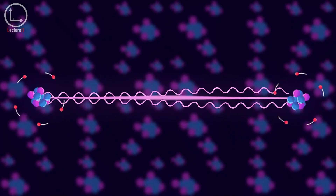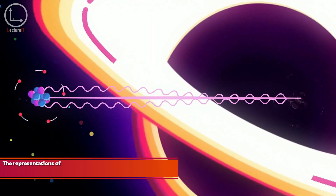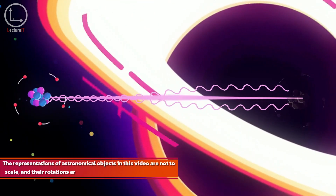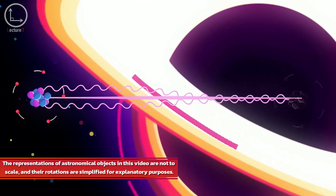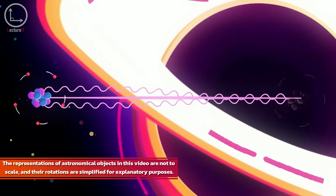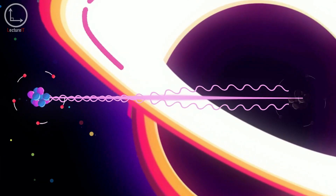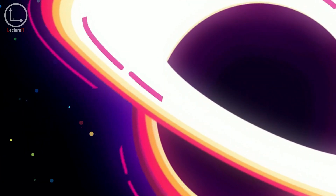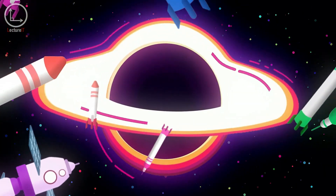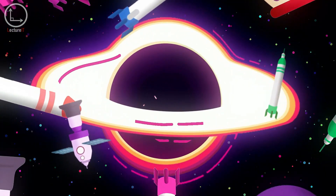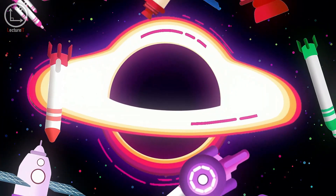So, if one particle were to fall into a black hole while its twin remained outside, wouldn't the latter still retain some memory of the former state? Thus arises the conundrum: does the information really disappear within a black hole, or does it somehow find a way to endure?